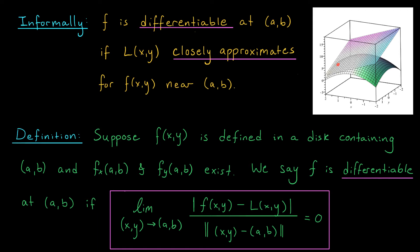Now here's the formal definition. We want a function that's defined at all points around (a, b), so we'll insist that f is defined in a disk containing (a, b). And since we want to be able to talk about its tangent plane, we need its two partial derivatives to exist. Formally, we're going to say that such a function is differentiable at a point (a, b) if this limit is equal to zero. In the numerator, we have the absolute value of f of xy minus L of xy — the distance between our function and the tangent plane. In the denominator, we have the distance between (x, y) and (a, b). So if this limit is going to zero, the distance between our function and our tangent plane is going to zero faster than the distance between (x, y) and the target point (a, b). As we get closer and closer to (a, b), the tangent plane is really becoming a better and better approximation to the values of our function.